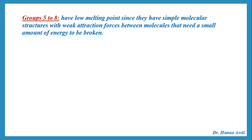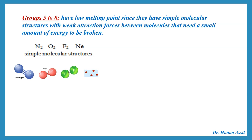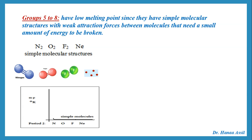Going from group 5 to group 8, these all have low melting points because they all have simple molecular structures with weak attraction forces between molecules. Nitrogen are simple diatomic molecules. Oxygen, fluorine, neon are simple monatomic molecules. All of these have very weak attraction forces between their molecules, which need only a small amount of energy to be broken, and that is why they all have very low melting points.